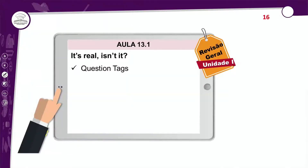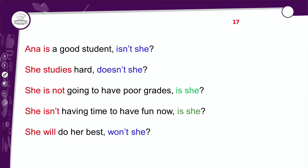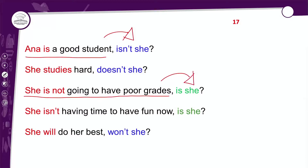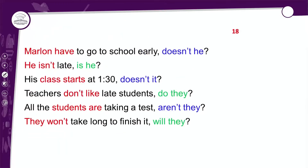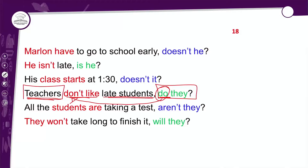Nós também vimos sobre as question tags. A question tag: se a frase é afirmativa, a sua pergunta é negativa. Se a frase é negativa, a sua pergunta é afirmativa. É sempre o contrário. Anne is a good student — isn't she? Por que isn't she? Porque eu usei o she representando a Ana, e peguei o verbo to be na negação, porque preciso fazer o contrário. As question tags são aquelas perguntas no final para confirmar o que a gente falou antes. Teachers don't like late students — do they? O do aqui vem na afirmação, e o they para falar de teachers. Muita informação, mas é isso, está tudo fresco na cabeça de vocês.